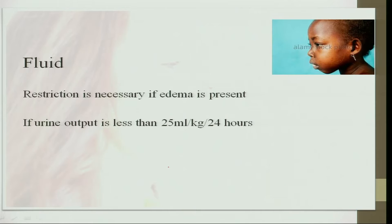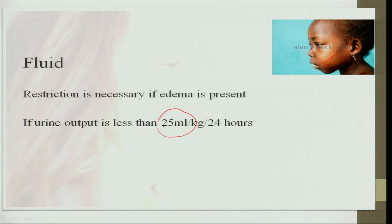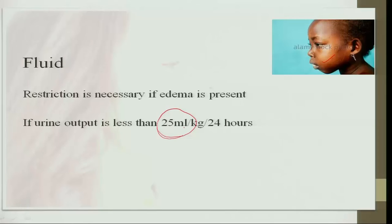Sodium is restricted to further reduce edema and prevent hypertension, with salt restricted to 2 to 3 grams per day, while low sodium foods can be consumed liberally. Fluid restriction is highly necessary if edema is present. If urine output is less than 25 ml per kg body weight per day, fluid intake must be greatly restricted — compared to the normal filtration rate of 125 ml per minute, this shows how much fluid is being retained. If all these measures are taken, further kidney degeneration can be prevented and the patient can recover.